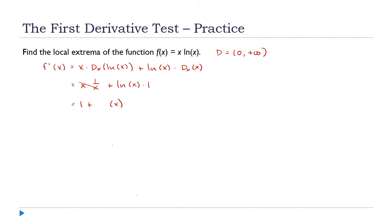Where does this equal zero? Move the minus 1 over: ln(x) equals negative 1. Converting to exponential form, this gives x equals e to the negative first.